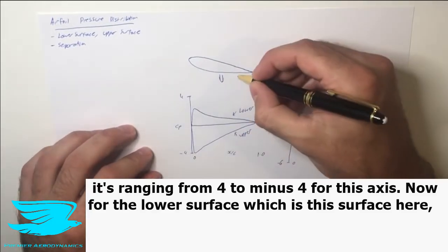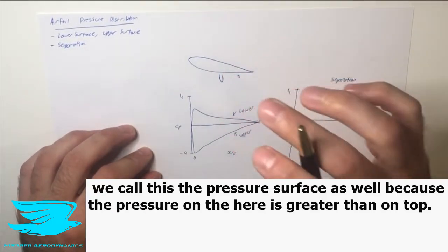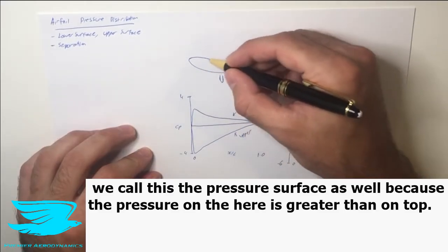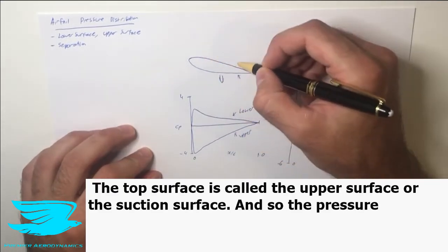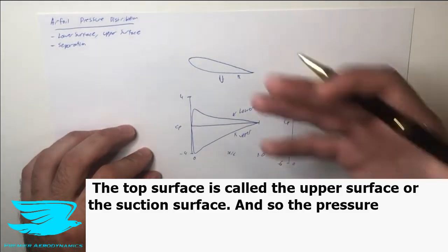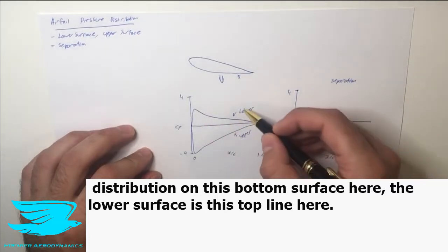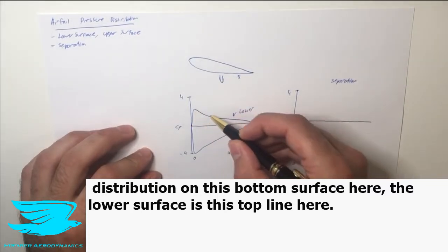Now for the lower surface, which is this surface here, we call this the pressure surface as well because the pressure under here is greater than on top. The top surface is called the upper surface or the suction surface. So the pressure distribution on this bottom surface, the lower surface, is this top line here.